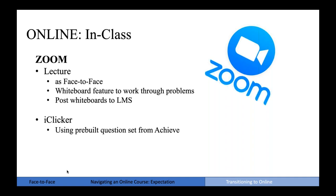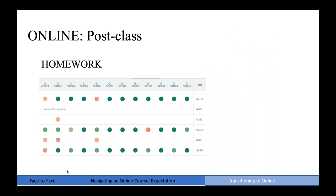During class lecture, I incorporate iClickers. iClicker is a pre-built question set also found in Achieve, and students can access it using their mobile device. As soon as students enter the class on Zoom, they open their iClicker app. We lecture, do a few problems, then I put up an iClicker slide. Students answer, I may give them an opportunity to get into breakout rooms to work in groups, then come back and re-poll. This sequence keeps class engagement very similar to what I would do face-to-face. Post-class, I get an Achieve report showing what problems students had issues with, so I know what to start my next lecture with.